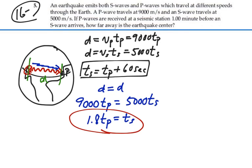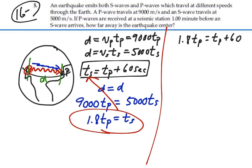Let's take this and substitute in there. So now we have that 1.8 times the time for a P wave is equal to the time for a P wave plus 60. Subtract the time T sub P from both sides. So I have 0.8 T sub P is equal to 60, or the time for a P wave is 60 divided by 0.8, which will give me 75 seconds.